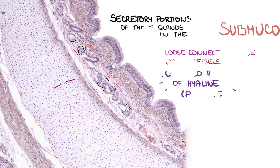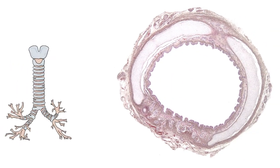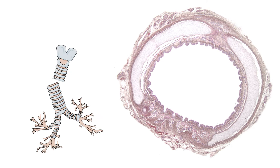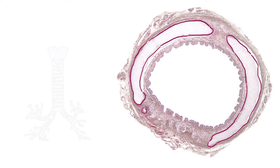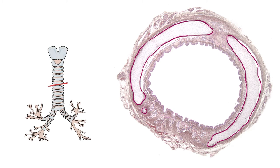This is not a precise cross-section, because we see hyaline cartilage as if it were cut in pieces, instead of a nice C-shaped structure. It's given by the plane of the section, as we can see cartilages from different levels with submucosal loose connective tissue in between.